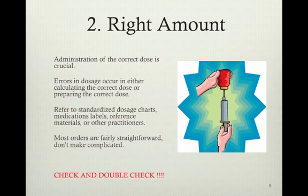The right amount: administration of the correct dose is crucial. Errors in dosage occur in either calculating the correct dose or preparing the correct dose. Refer to standard dosing charts, medication labels, reference materials, or other practitioners. Most orders are fairly straightforward — don't make them complicated. Check and double check if you're unsure.